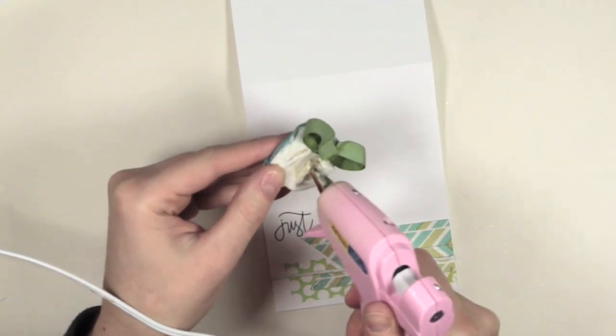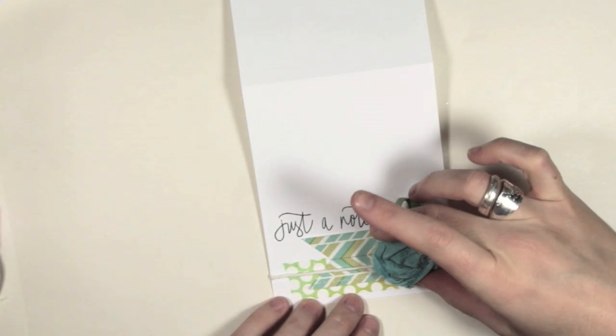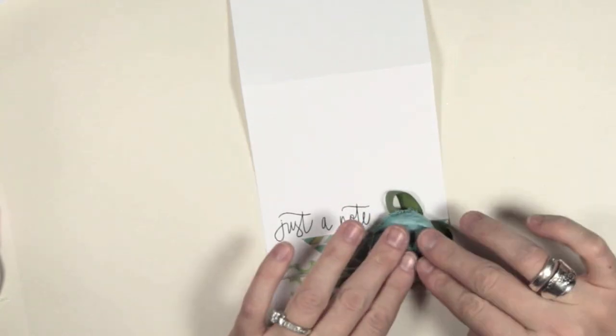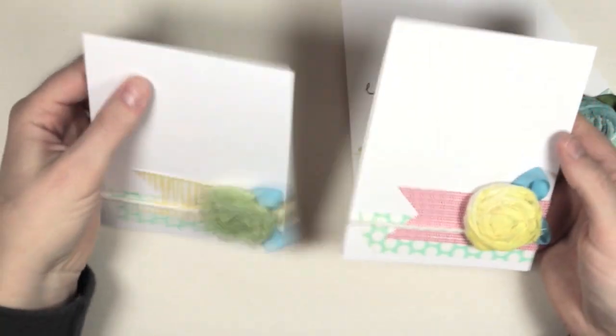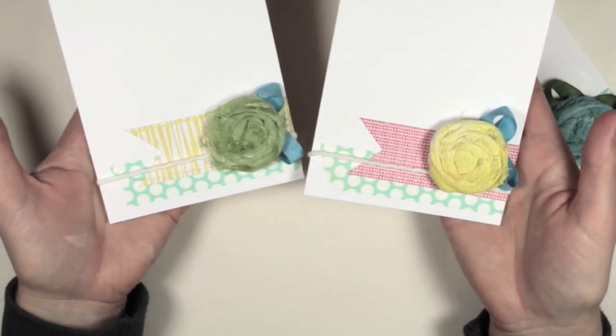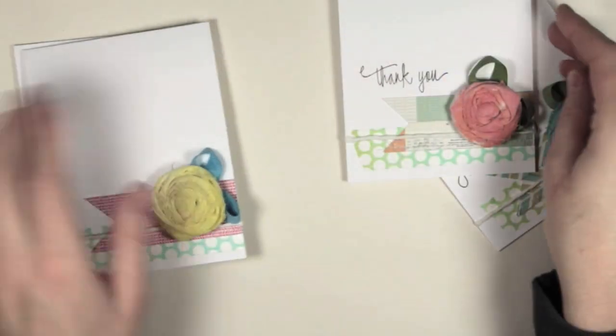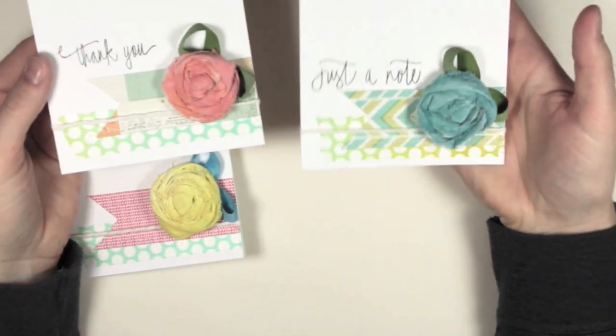The final step is to adhere the floral rosettes onto the card front. I've decided to keep two cards sentiment-free so that in the future when I need a card quickly, I can pull this out, add a quick sentiment like happy birthday or thinking of you, and have a card ready to go.